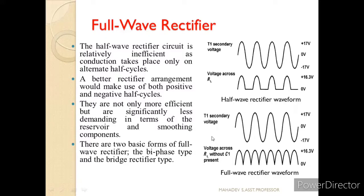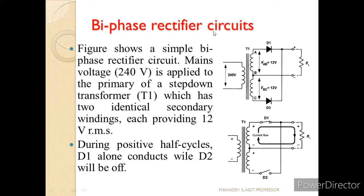In order to solve the problem created by the half wave rectifier, we go for a full wave rectifier, which means during the negative half cycle also conduction occurs. This can be achieved with two circuits: one is the biphase type, and another is the bridge rectifier type. First, let us see the biphase rectifier circuit. The input of the transformer is 240 volts, given to a secondary transformer connected with the help of a center tap. A load resistance RL is connected between diode D1 and the center tap, and point C is also connected to the load resistance along with the center tap.